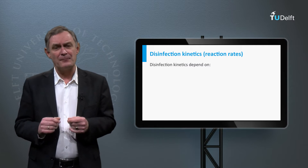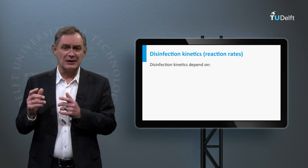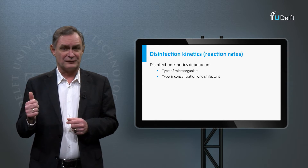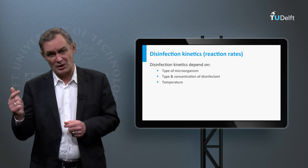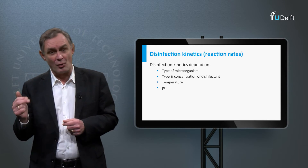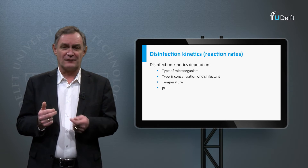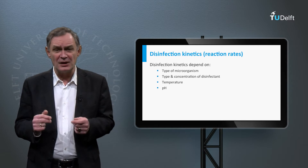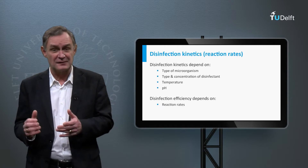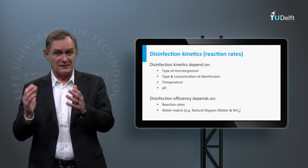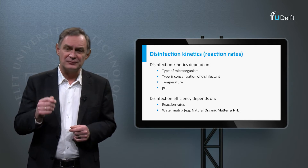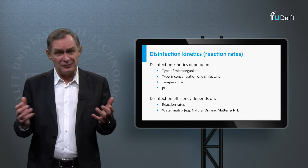Besides the type of microorganism, the kinetics of disinfection also depends on the type and concentration of disinfectant, the temperature – with a lower temperature the disinfectant is less effective – and the pH; the lower the pH, the more effective chlorination is. The efficiency of the disinfection method also depends on the matrix of the water, such as the presence of natural organic matter or ammonium, because these substances also react with the disinfectant.